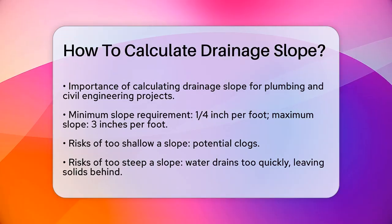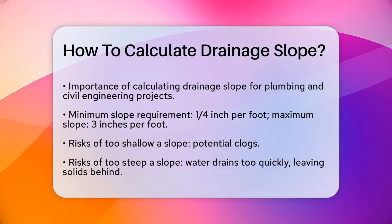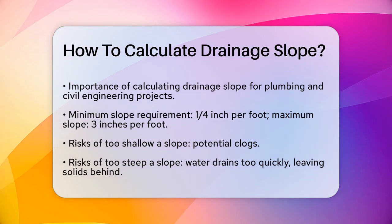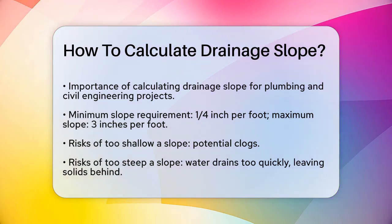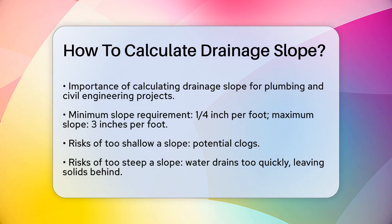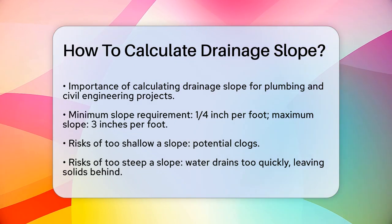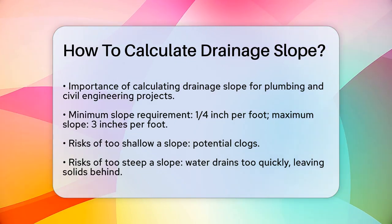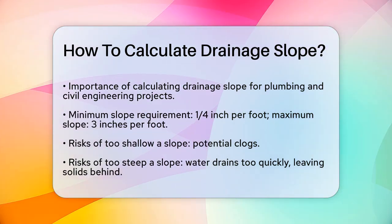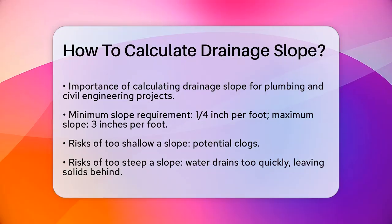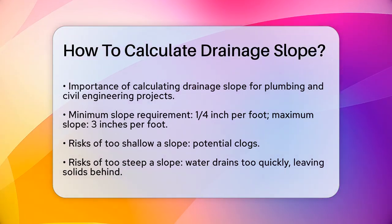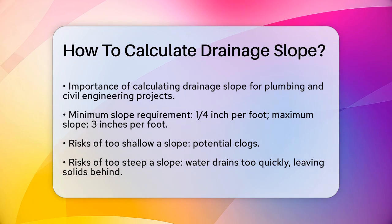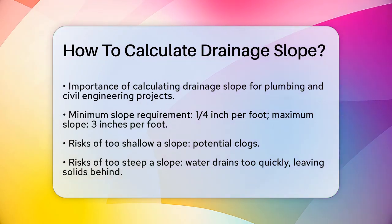First, you need to understand the basic requirement for drainage slopes. According to plumbing codes, a drain pipe must be sloped at a minimum of ¼ inch per foot and a maximum of 3 inches per foot. This range is crucial because a slope that's too shallow can cause clogs, while a slope that's too steep can lead to water draining too quickly, leaving solids behind.